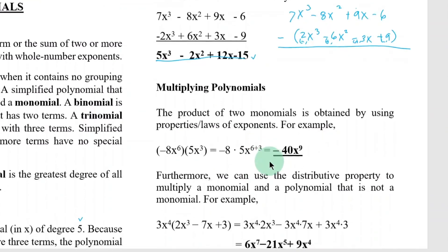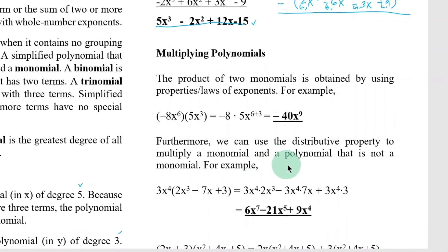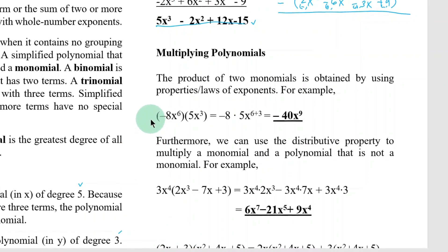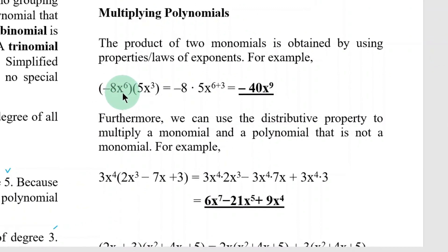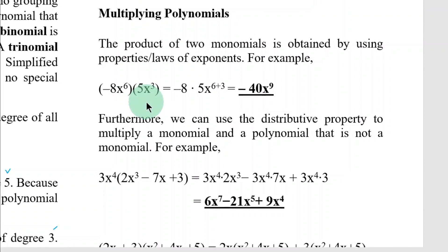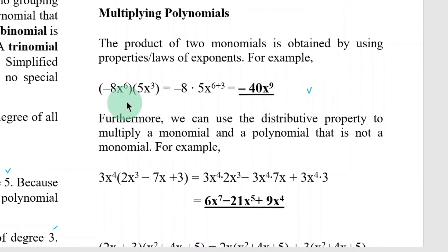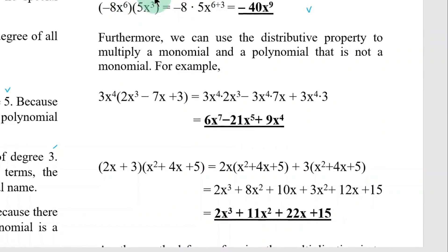Next is multiplying polynomials. The product of two monomials is obtained by using the properties or laws of exponents — we already discussed laws of exponents, and now you'll apply that first topic. For example, negative 8x to the 6th multiplied by 5x cubed — similar to the first topic, just multiplying monomials. The exponents add: 6 plus 3.